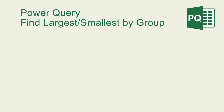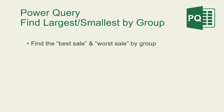For this video, we're going to see how to use Power Query to find the largest or smallest item by group. I have four different iterations that we're going to go through. The first will be just to find the best or worst sale by each group, leaving us with the group name and the best and worst sale.